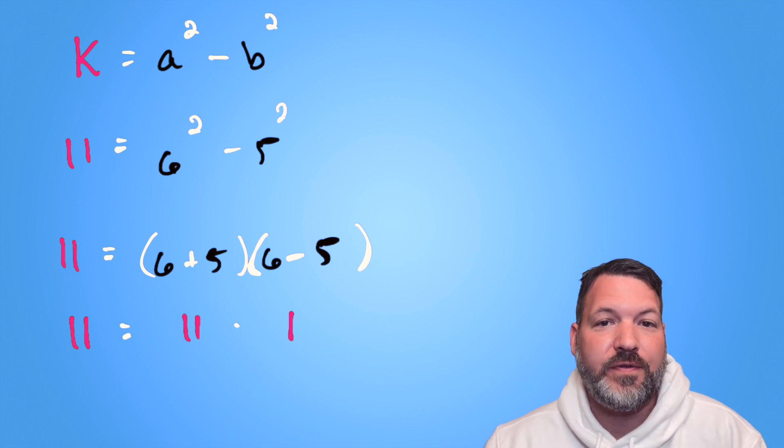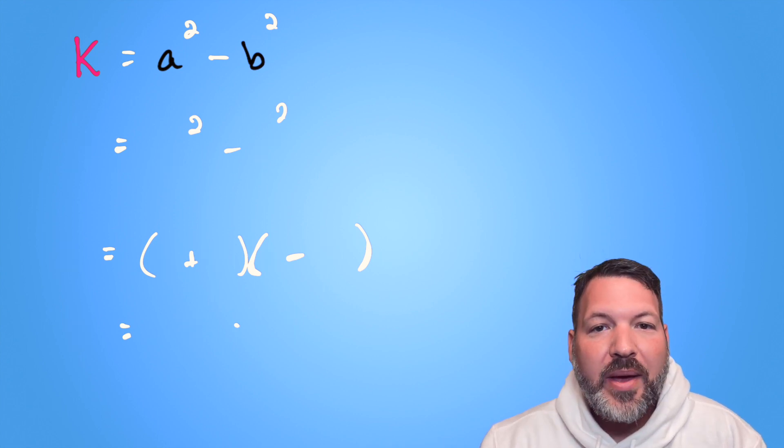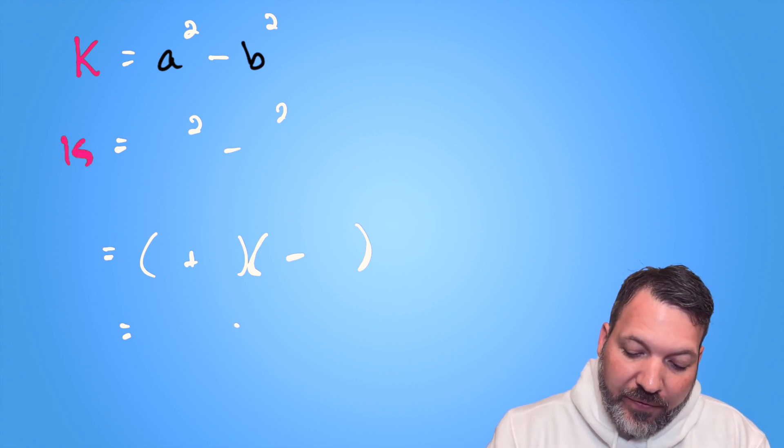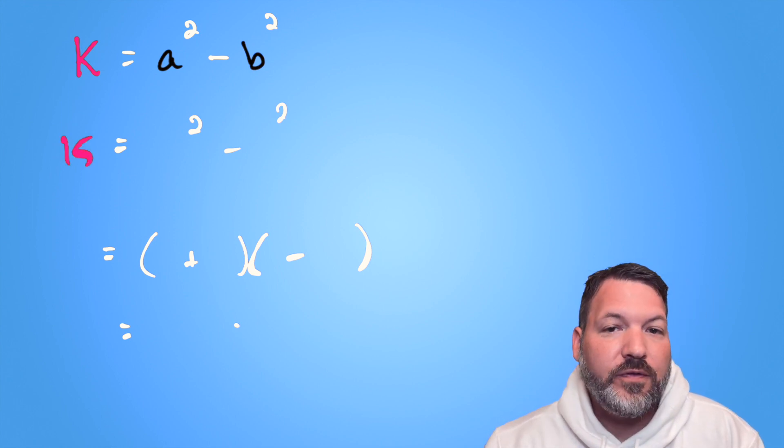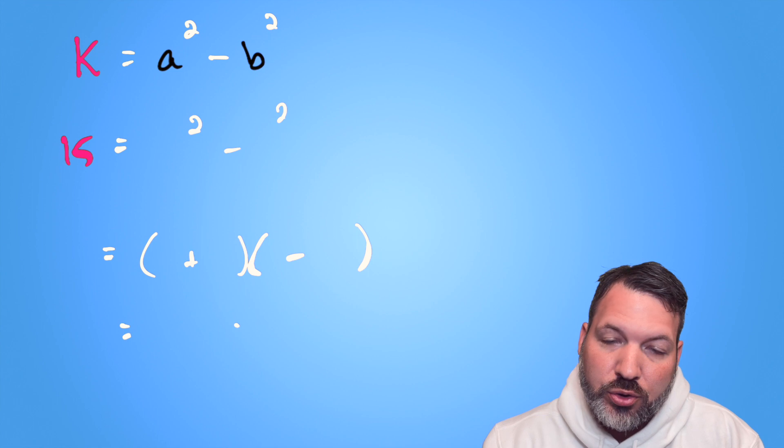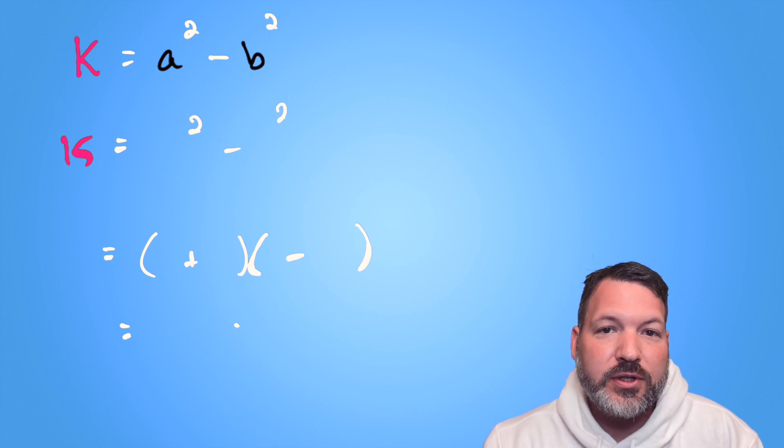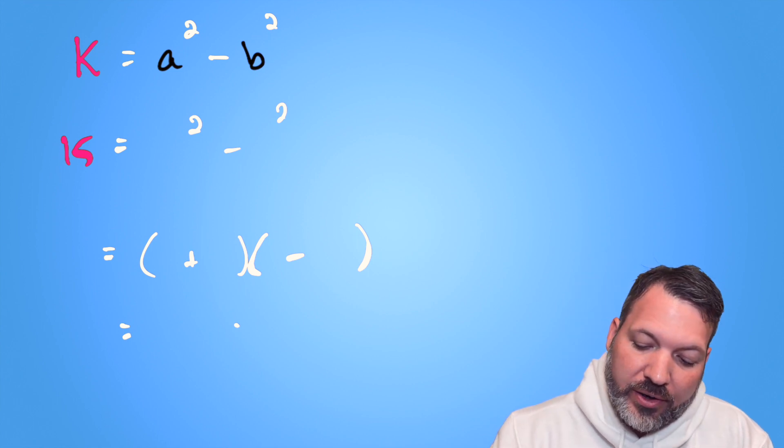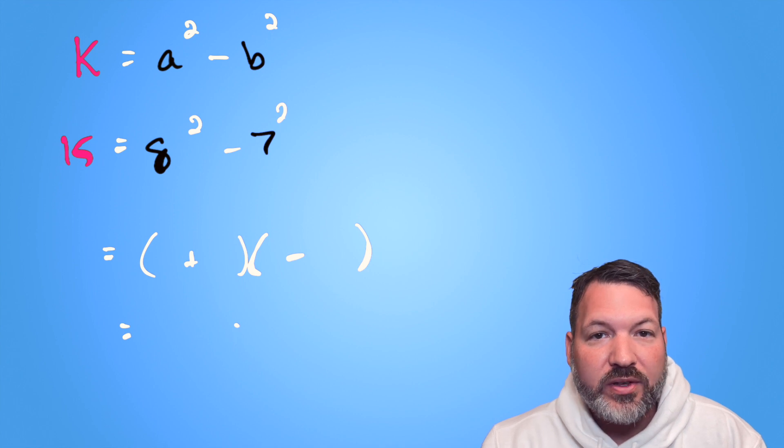But let's imagine a different odd number that's not prime, something like 15. On the one hand, yes, 15 can once again be written in a trivial way. It happens to be the difference between the two consecutive squares, eight squared minus seven squared. Eight squared is 64, seven squared is 49, 64 minus 49 is 25.